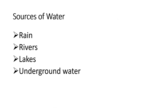The main sources of water are rain, rivers, lakes and underground water. Fresh water constitutes only 3% of the total water on earth. The distribution of fresh water is very uneven on earth.